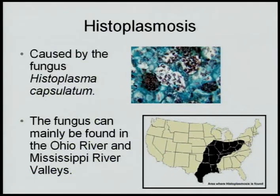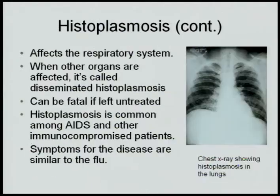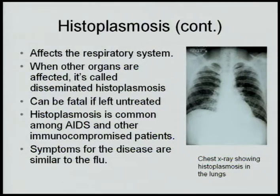Histoplasmosis is caused by the fungus Histoplasma capsulatum, and the fungus can mainly be found in the Ohio River and Mississippi River valleys. It mainly affects the respiratory system, but when it affects other organs, it's called disseminated histoplasmosis, and it can be fatal if left untreated. Histoplasmosis is common among AIDS and other immunocompromised patients, and symptoms are similar to that of the flu.